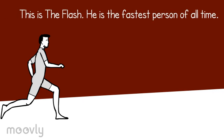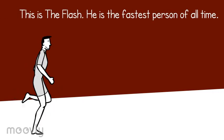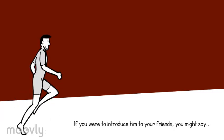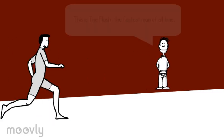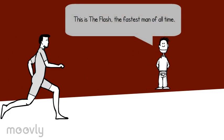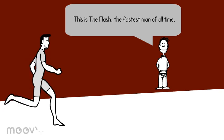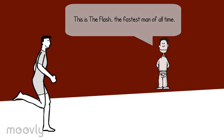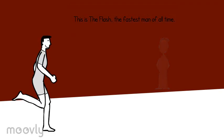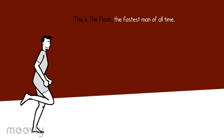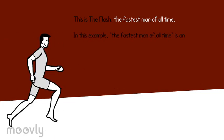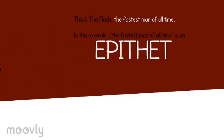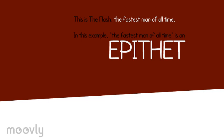This is the Flash. He's the fastest person of all time. If you were to introduce him to your friends, you might say: 'This is the Flash, the fastest man of all time.' Notice how you described him as the fastest man of all time. In this example, the fastest man of all time is an epithet.